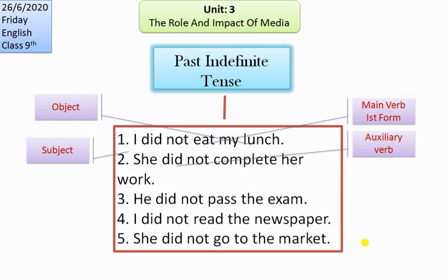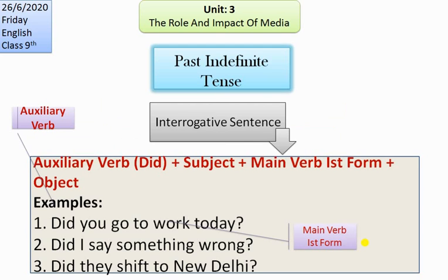For example, 'I did not eat my lunch' — subject 'I,' auxiliary 'did not,' first form 'eat,' object 'my lunch.' For interrogative sentences, we put the auxiliary verb 'did' first, then subject, then main verb in first form, then object. For example, 'Did you go to work today?' — 'did' is auxiliary, 'you' is subject, 'go' is the first form. That's all for today, thank you!